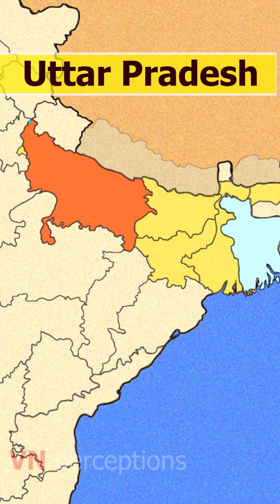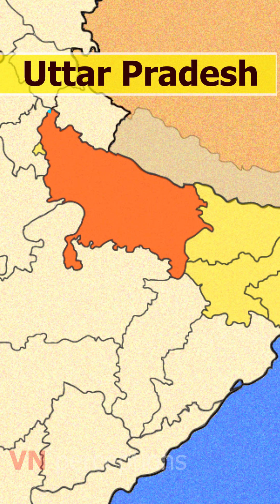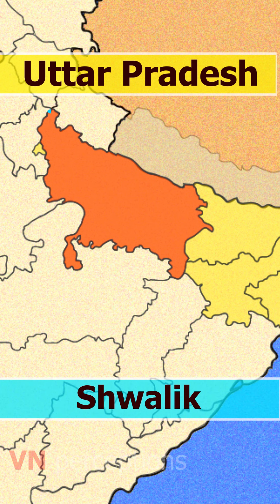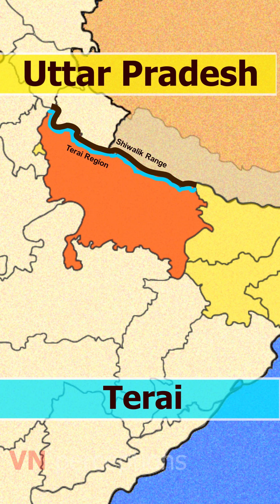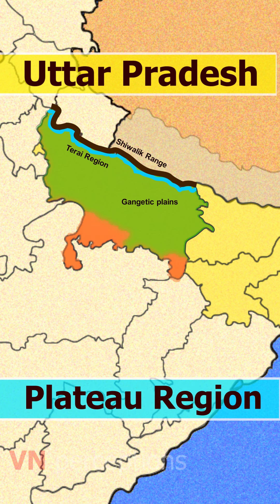When we say topography, it refers to the nature and slope of the land. So based on the nature and slope of the land, Uttar Pradesh can be broadly divided into: first, the Shivalik foothills of Himalayas and the Tarai region, which borders Uttar Pradesh on the north; second, the Ganga Plains, which cover the major central portion of the state; and third, the Vindhya Ranges and the Plateau that lie in a relatively small part of southern Uttar Pradesh.